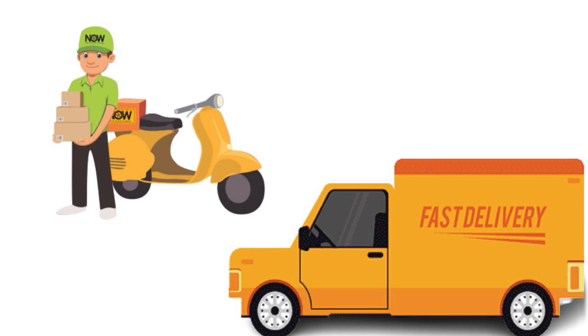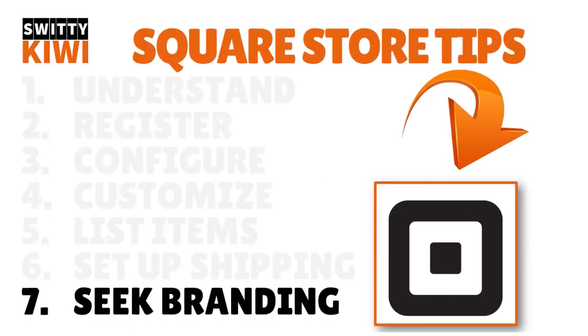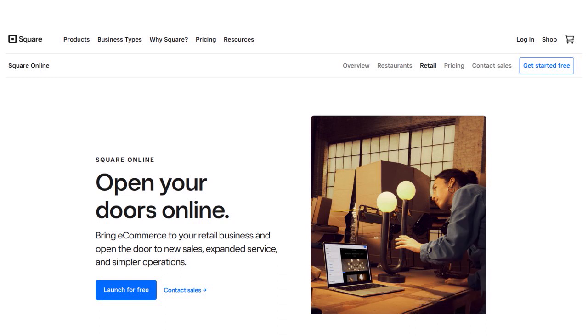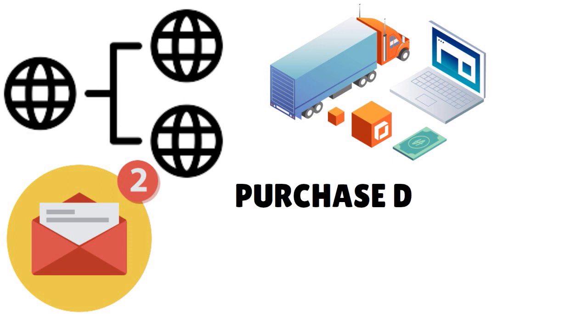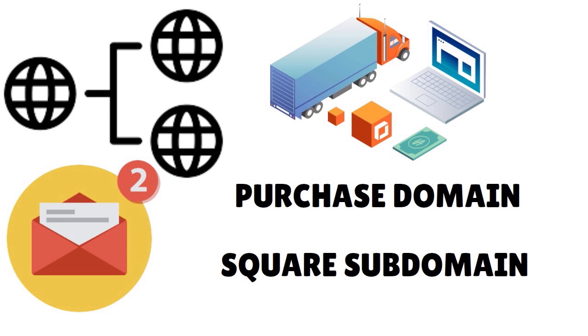The final step is branding. First, set up your website URL. Square will prompt you to set up a domain — there are three options: a free Square subdomain, purchasing a domain through Square for $12 per year, or connecting an existing domain. Upgrading to a paid plan makes your website more legitimate in the eyes of potential customers and grants access to features like abandoned cart recovery emails and advanced shipping options. Avoid the free subdomain if possible.